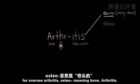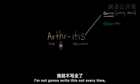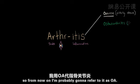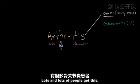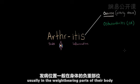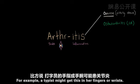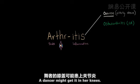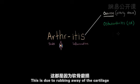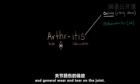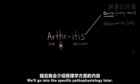Osteo means bone — osteoarthritis, which I'll refer to as OA. Lots of people get this, usually in the weight-bearing parts of their body or whatever is overused the most. For example, a typist might get this in her fingers or wrists; a dancer might get it in her knees. This is due to rubbing away of the cartilage and general wear and tear on the joint. We'll go into the specific pathophysiology later.